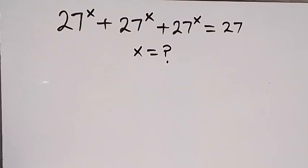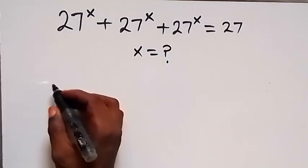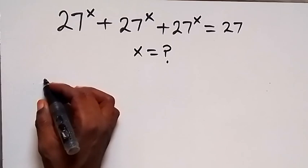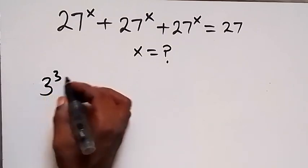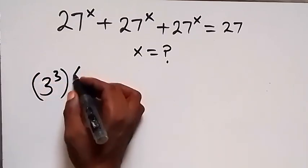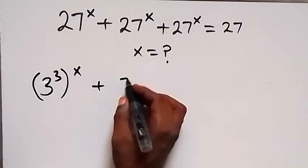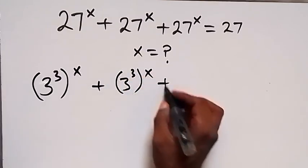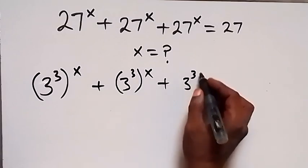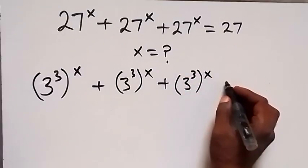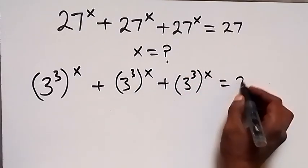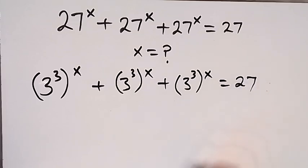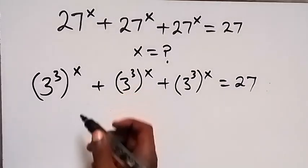Hello, you are welcome. How to solve for x in this algebra problem. We change it to base 3: we have 3 raised to power 3, then raised to power x, plus 3 raised to power 3 raised to power x, plus 3 raised to power 3 raised to power x, which equals 27.